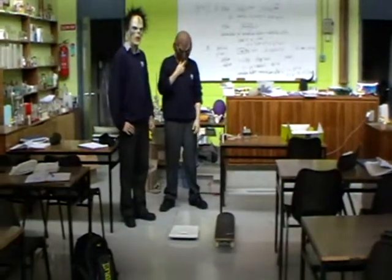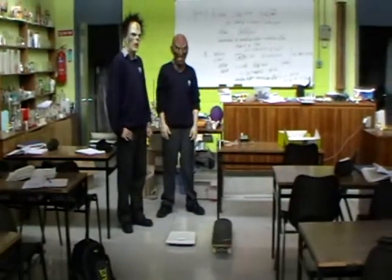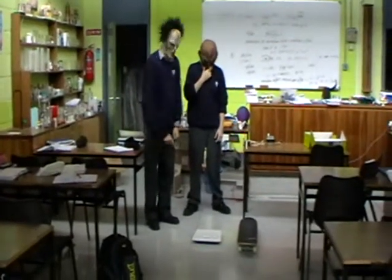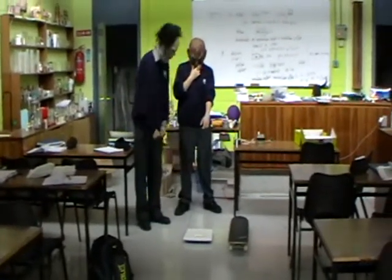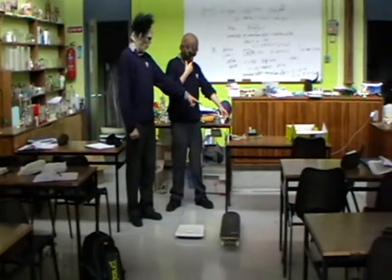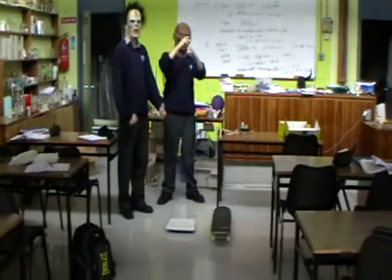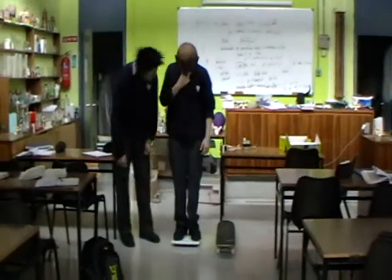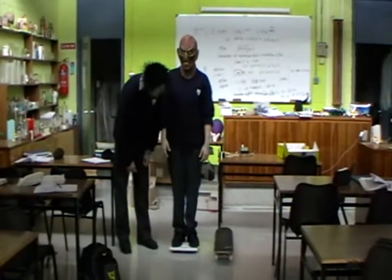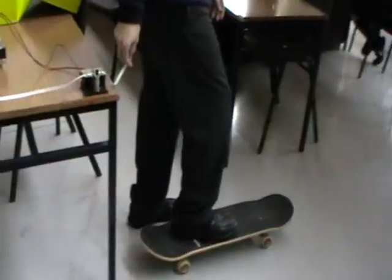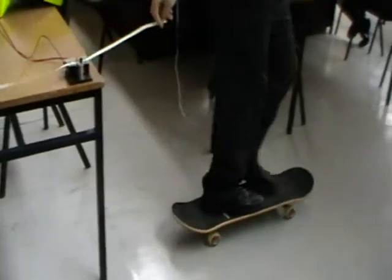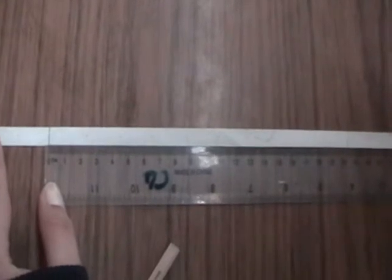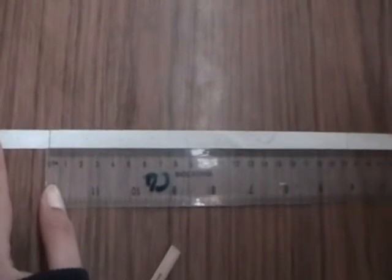We are going to find the momentum of a student on the skateboard. We will use weighing skills to measure his mass and the trigger timer to measure the velocity, and we will multiply them to get the momentum. The length of 10-tick intervals is 20.5 cm.